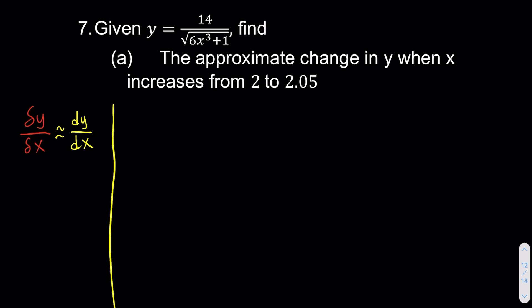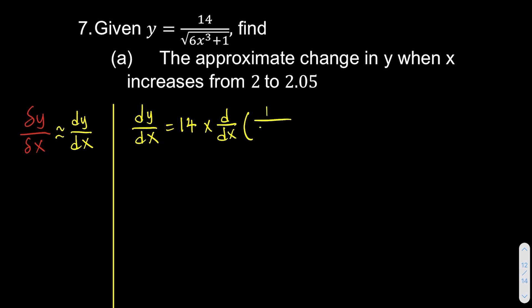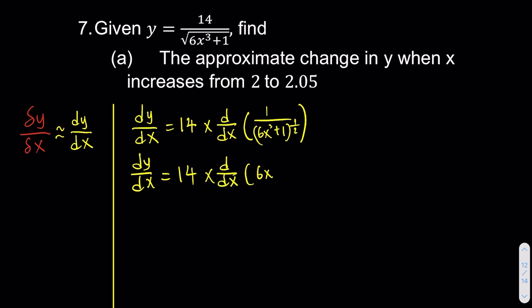In order to find dy over dx, we're just going to take the derivative. So dy over dx is equivalent to — we take the 14 out first — 14 times the derivative of the rest of the equation, which is 1 over (6x³ + 1) to the power of 1/2. So again, we have dy over dx equivalent to 14 times the derivative; we bring the root up, it becomes (6x³ + 1) to the power of negative 1/2.